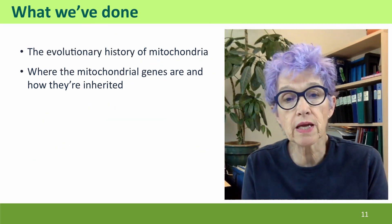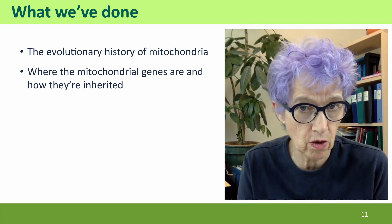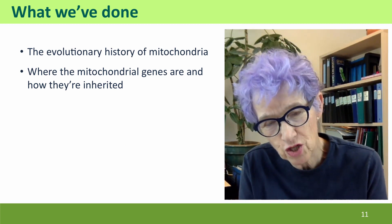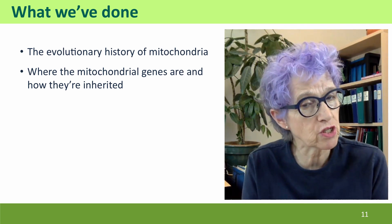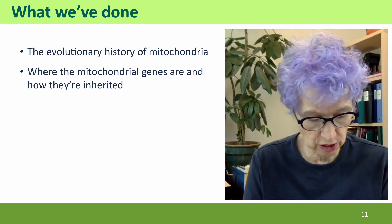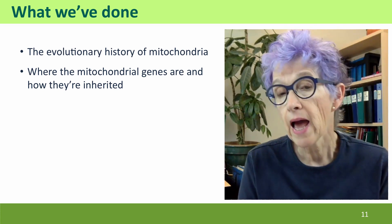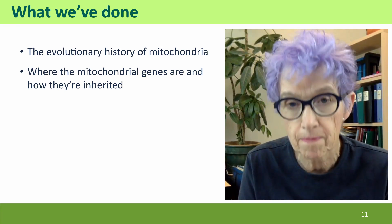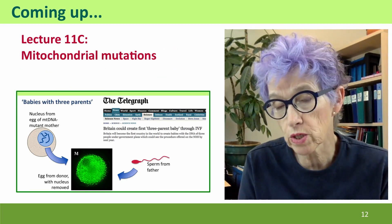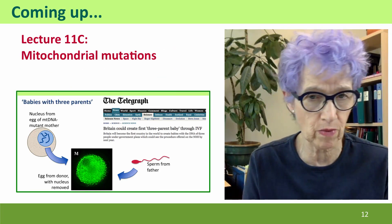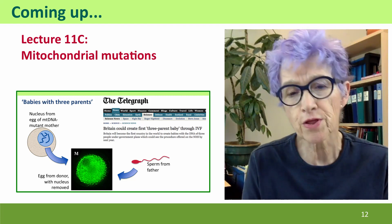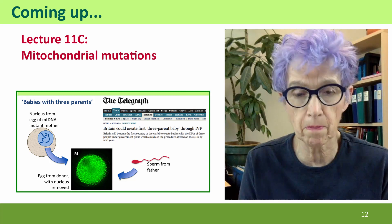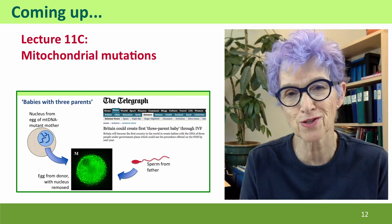So we've considered the evolutionary history of mitochondria, how they came to have genes, and how these genes are inherited — both the genes still in the mitochondrial DNA and the many more genes now in our own chromosomes. Coming up next, we're going to think about the genetics of mitochondria more explicitly, thinking about what happens when an individual inherits mutant mitochondrial DNA. I hope to see you there.